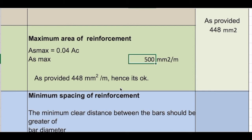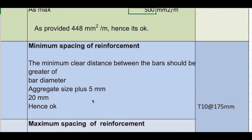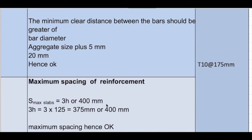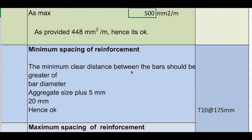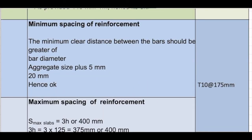For spacing: the spacing we provide is 175mm centre-to-centre. The minimum must be greater than the bar diameter (10mm), aggregate size plus 5mm, and 20mm — so that will be okay. The maximum spacing must be 3H or 400mm; H is 125mm, so 3 × 125 = 375mm or 400mm. Our spacing of 175mm is less than the maximum, so it is in range. Spacing checks and minimum/maximum area of reinforcement checks are all satisfied.